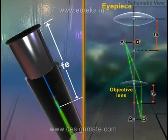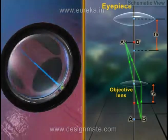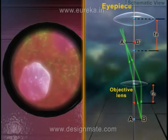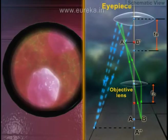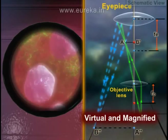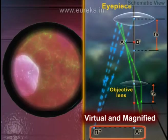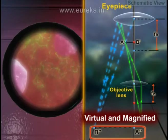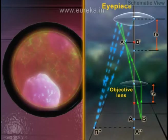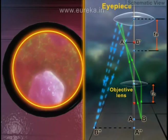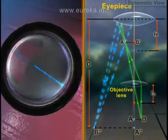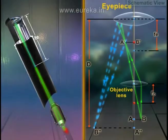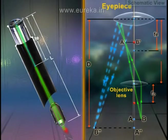The eyepiece acts like a simple microscope or magnifier. Hence, it forms a final image A''B'' which is virtual and magnified, and is formed on the same side of the eyepiece lens. We can see the clearest magnified image when it is formed at the least distance of distinct vision D. In a compound microscope, the distance between the objective lens and the eyepiece is known as tube length L.